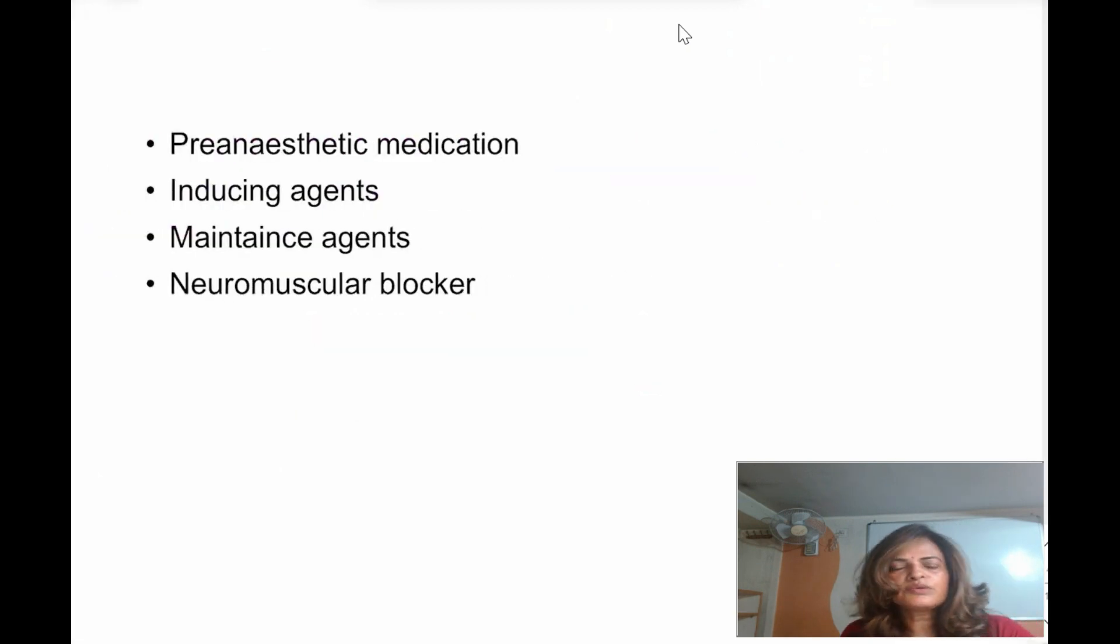Number one is pre-anesthetic medication. Pre-anesthetic medication includes sedative hypnotics, then for painkiller as an analgesic we can give opiate analgesics, then we can give antacids, we can give atropine-like drugs like glycopyrrolate. So different types of drugs are used as pre-anesthetic medication.